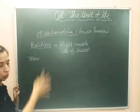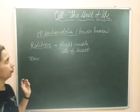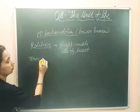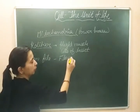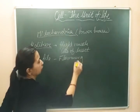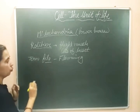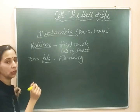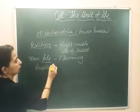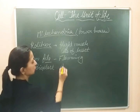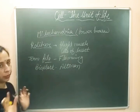The term mitochondria was given different names by different scientists. The scientist Flemming gave the term 'Fila'. Another scientist called the mitochondria 'Bioplast' — this term Bioplast was given by a scientist whose name was Altmann.